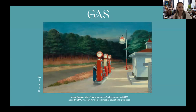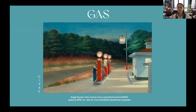Hopper's Gas offers a perfect example of his ability to take a simple subject with seemingly no action and turn it into a psychologically charged one. Here he depicts a single figure — a lone gas station attendant — within an overall quiet and bleak setting. There's a little bit of brightness with the presence of these red gas pumps, but the light in this painting, both natural and artificial, gives a sense of drama.